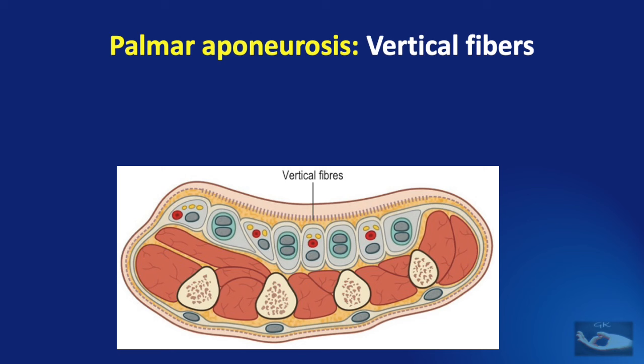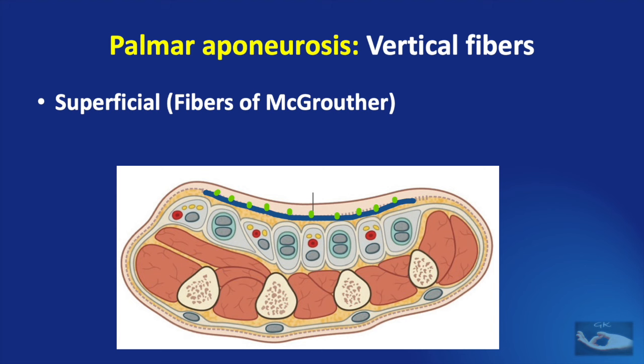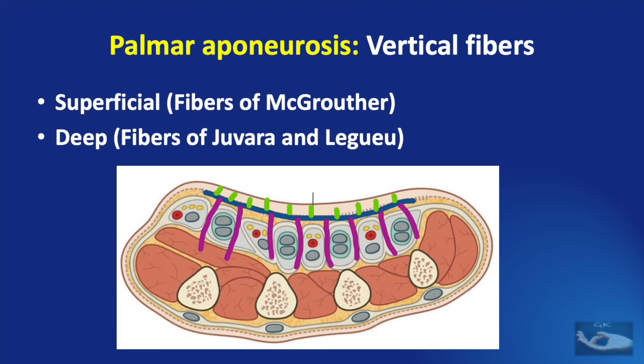So far we have seen the longitudinal fibres and the transverse fibres of the palmar aponeurosis. The vertical fibres of the aponeurosis are also important. There are vertical fibres that run superficially — that is, towards the skin — and are known as the fibres of McGrother. And deep fibres that run lateral to the flexor tendons to the metacarpal bone and the palmar fascia of the interosseous muscles, to divide the palm into eight compartments: four for the flexor tendons and four for the neurovascular bundles.